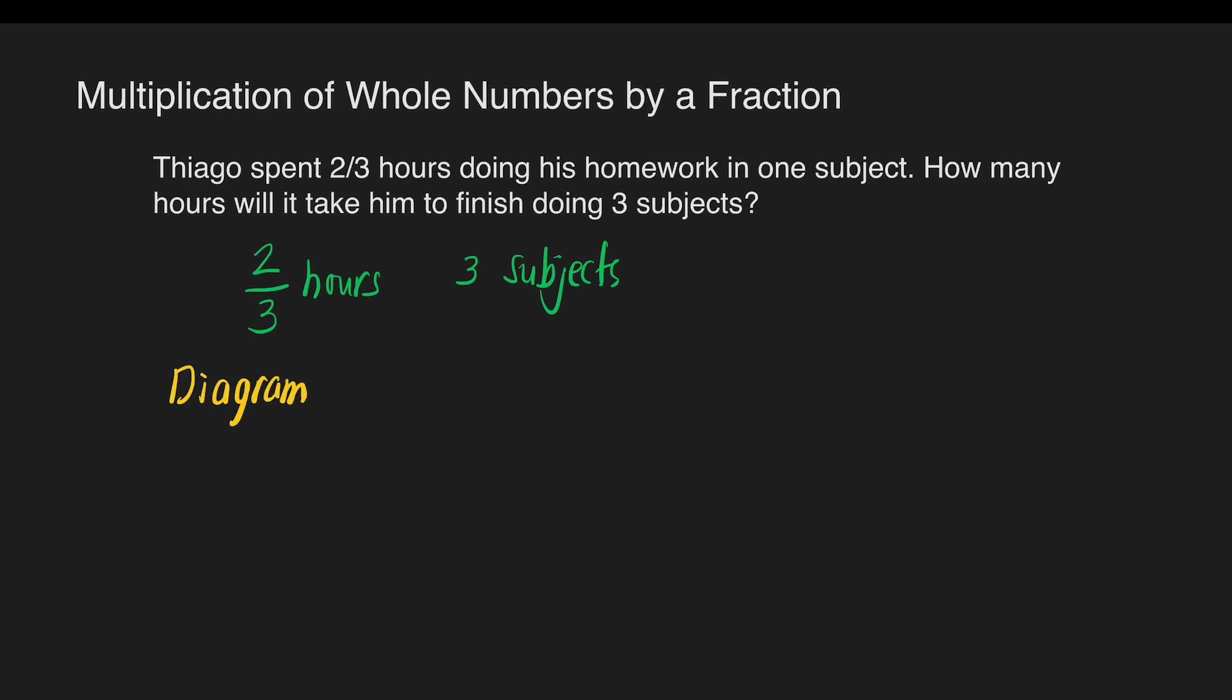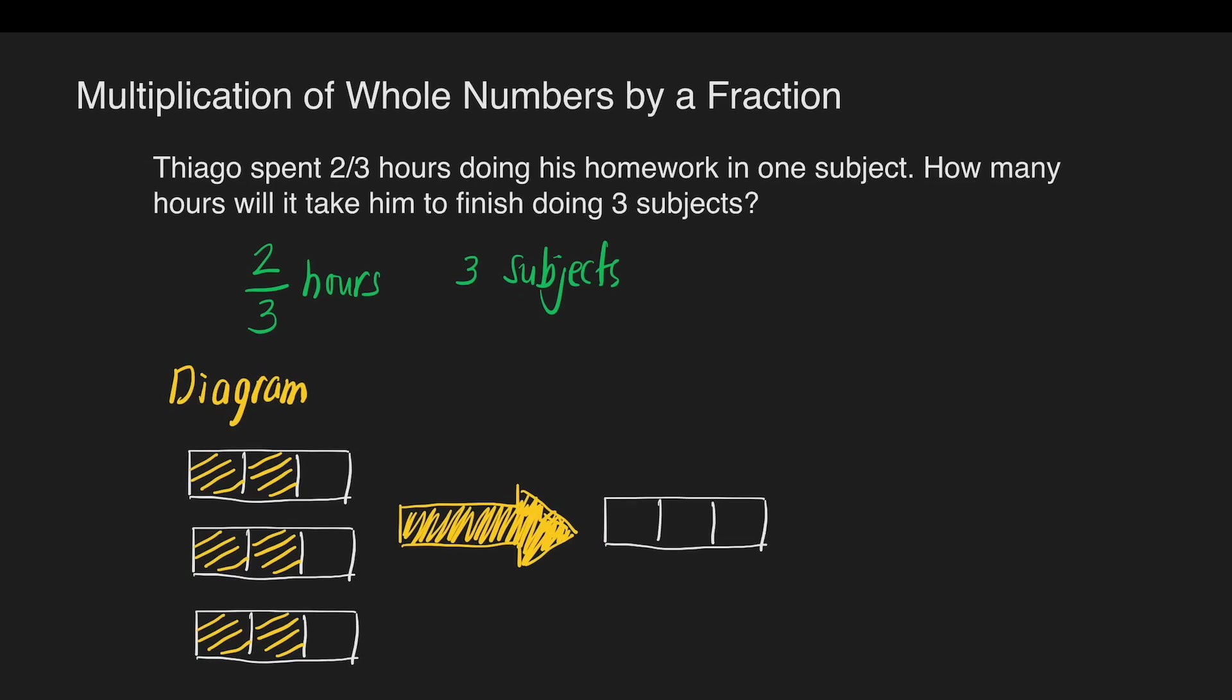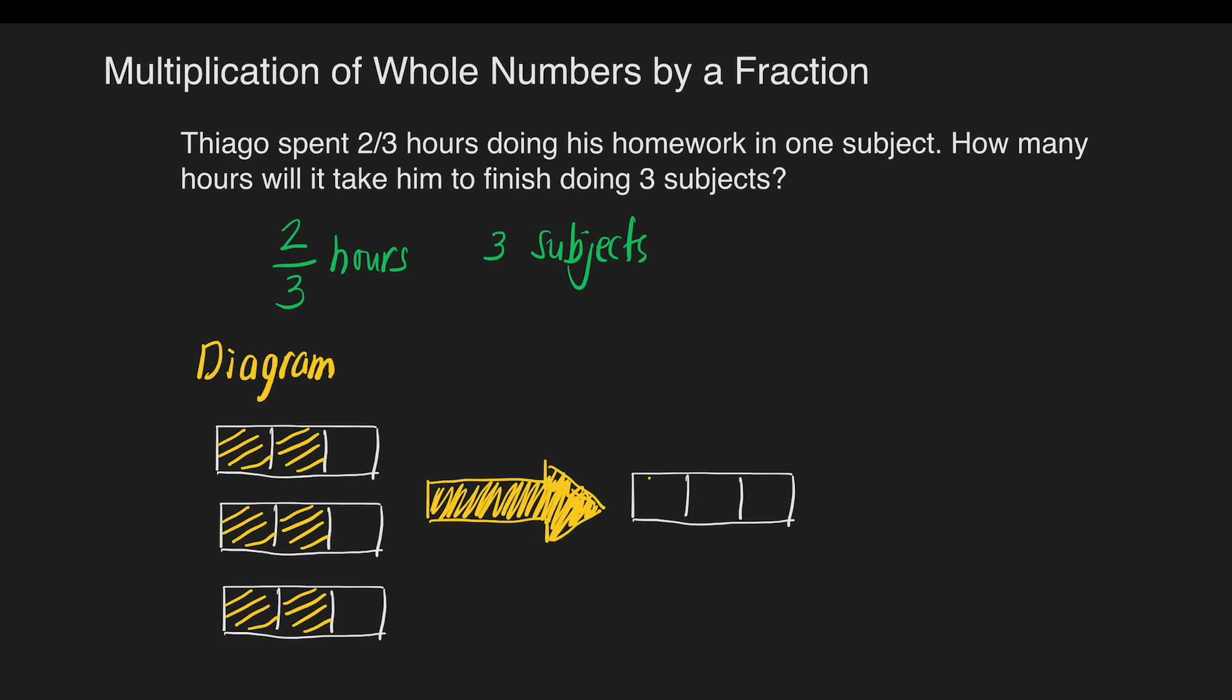The diagram shows that we have 2 thirds of an hour. So this is 1, 2 thirds. And another 2 thirds and another 2 thirds, because we need to have 3 subjects. So based on this diagram, there are 6 shaded parts. We can do this diagram in this way. That's 1. We need to have 6 shaded parts. That's 2, that's 3. We need to make another box so that we can shade 6. That's 4 and 5 and then 6. How many wholes did we have? So we had made 2 wholes. It means our answer is 2.